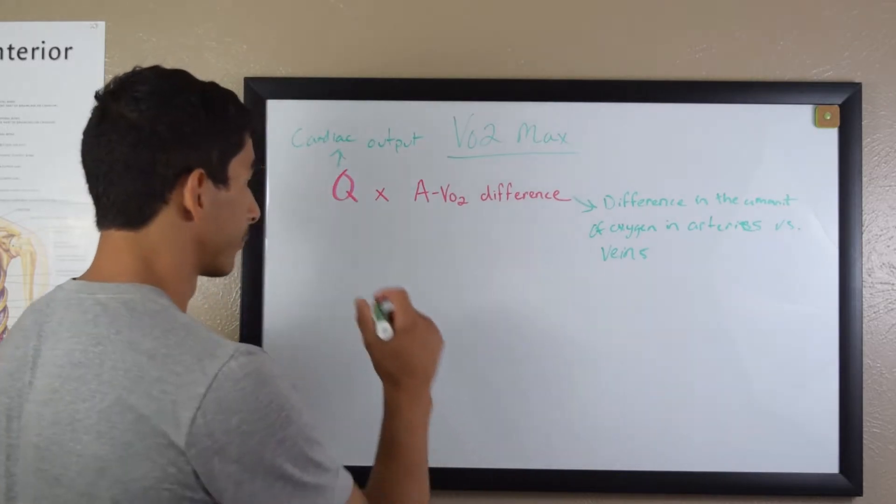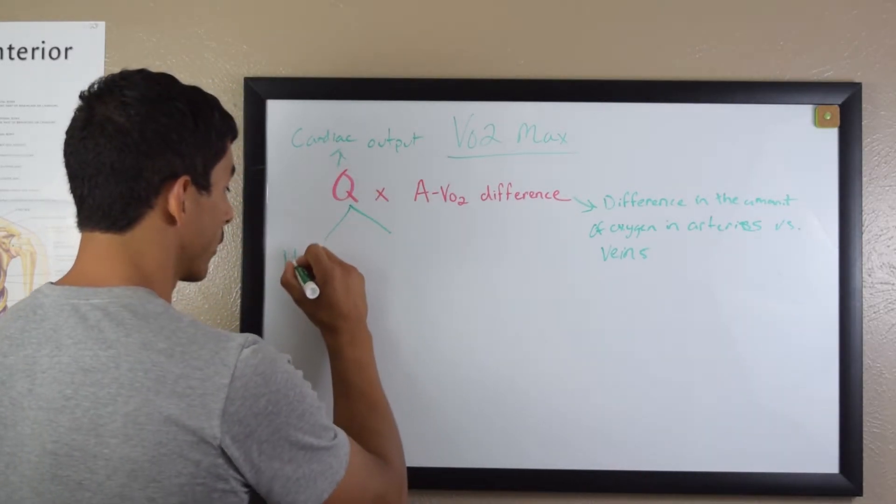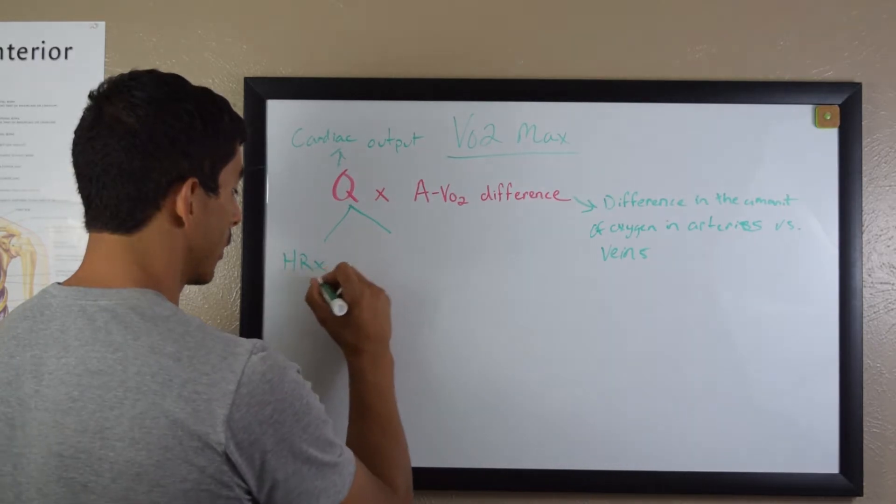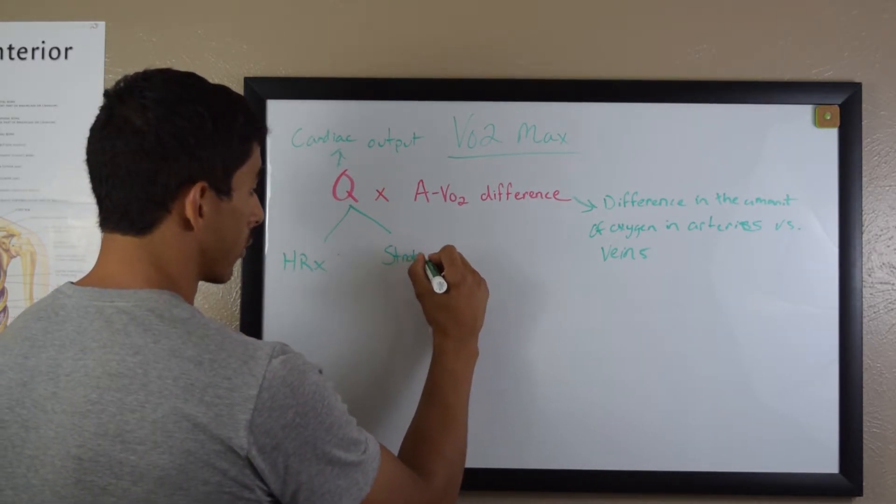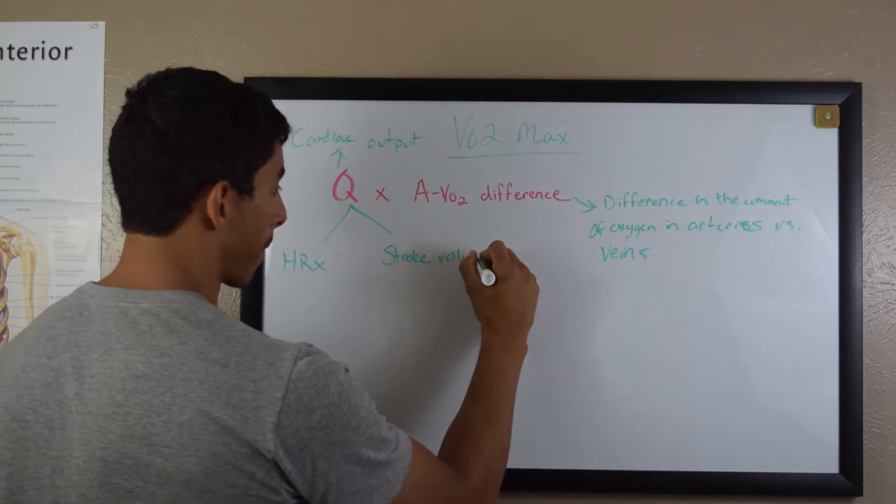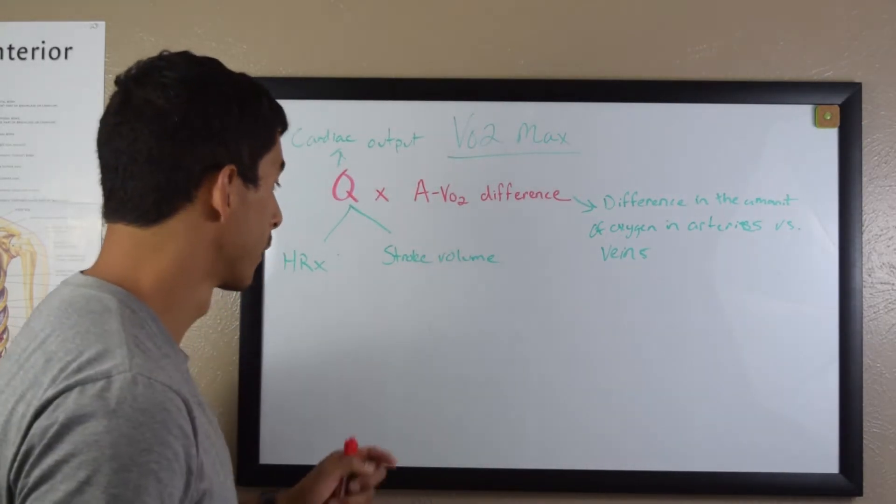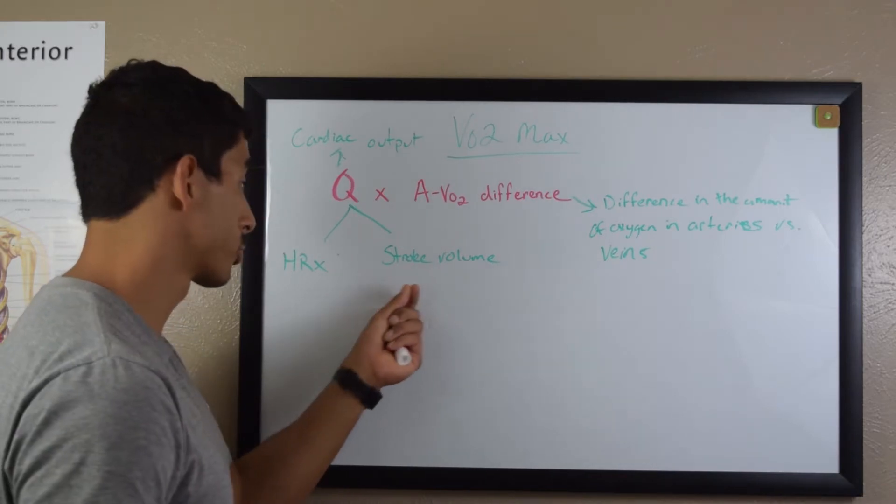Cardiac output is heart rate times stroke volume. So cardiac output is heart rate times stroke volume.